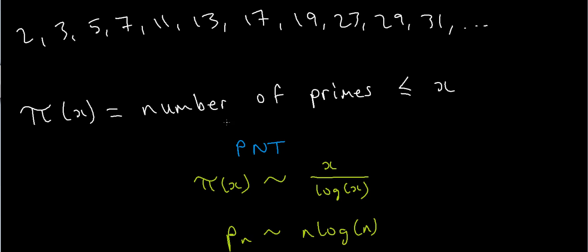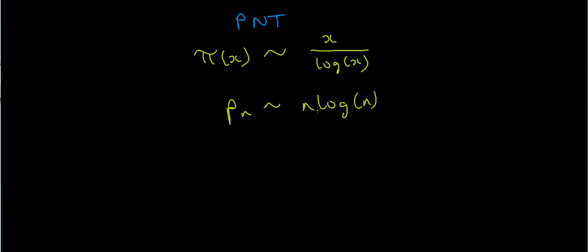For instance, we have the so-called prime number theorem, which is one of the most celebrated theorems in mathematics. That tells you that pi of x, the prime counting function, is asymptotically equal to x over log x. An equivalent way of writing this is to say that the nth prime number is approximately n log n. So for arbitrarily large n, you can expect the nth prime number to be about n log n.